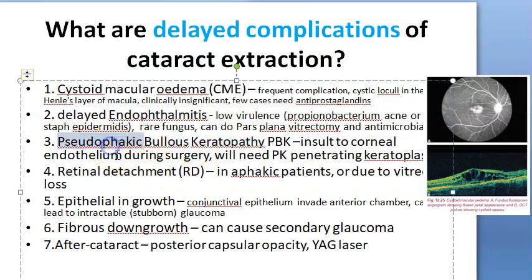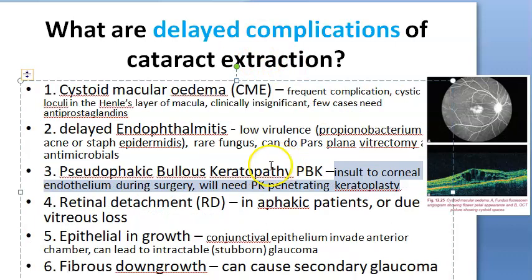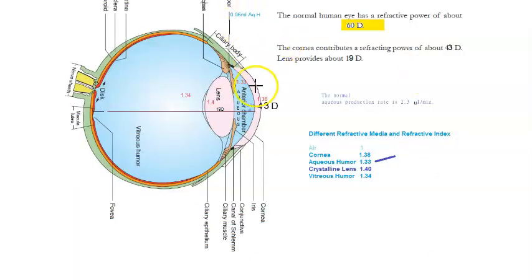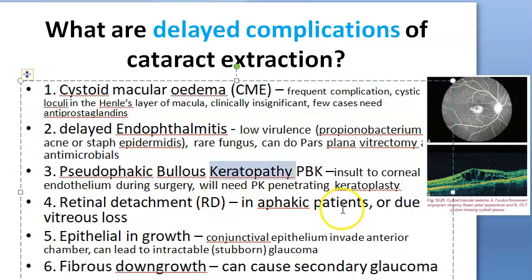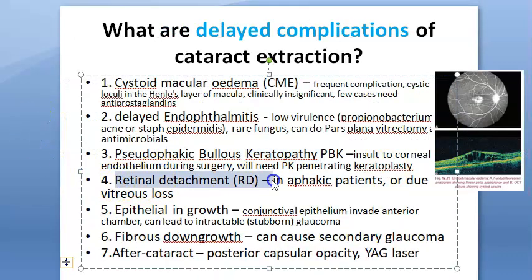Pseudophakic bullous keratopathy occurs when the corneal endothelium is damaged during surgery. After the surgery, because the corneal endothelium is gone, the patient may require a corneal transplant. Retinal detachment can occur as a late complication — especially in aphakic eyes — and can also result from vitreous loss, which was noted as a serious operative complication.